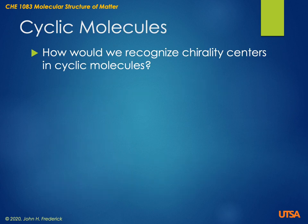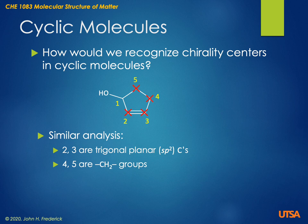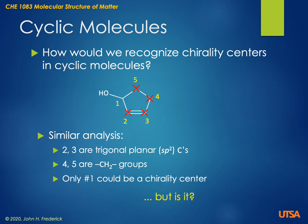Now we're going to look at a possibly chiral molecule that is cyclic. We would use the same kind of elimination scheme. We would notice that carbons two and three are trigonal planar, or sp2 carbons, so they cannot be chiral centers. Four and five are CH2 groups — they cannot be chiral centers either. The only one that could be a chiral center is carbon number one. But it's hard to tell when we have a cyclic molecule, because at this point we can't tell if two of those groups are bonded to the same thing or not.